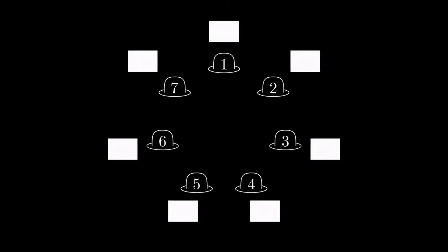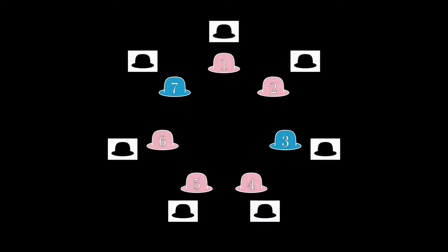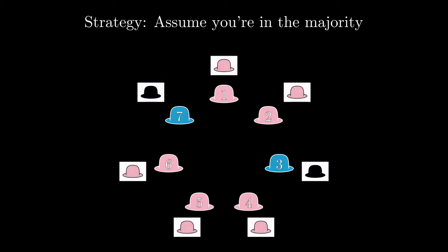Now that we have some familiarity with the process, let's look at a strategy that does significantly better. In this strategy, everyone assumes that they have the majority hat color. For instance, in this hat setting, there are 5 pink hats and 2 blue hats. A player with a pink hat would see 4 pink hats and 2 blue hats. And as per the strategy, they would guess that they have a pink hat on. A player with a blue hat would see 5 pink hats and 1 blue hat, and would also guess pink. 5 of them would be correct. So although nobody knows what hat they have on, this strategy coordinates guesses in such a way that if there is a clear majority, the majority guesses correctly.